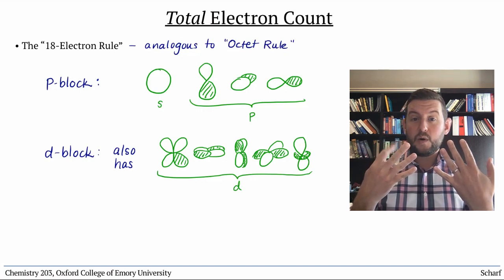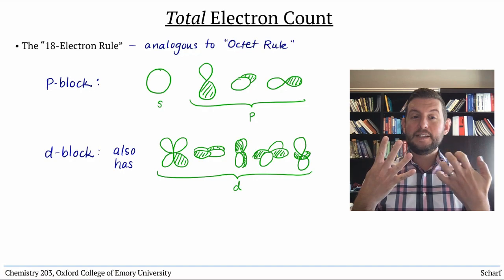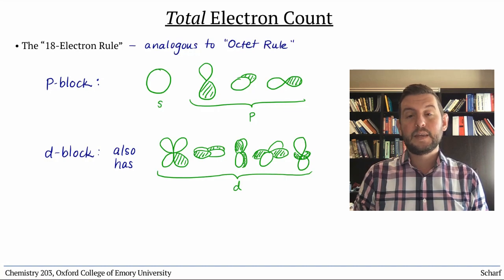Since there are one s orbital, three p orbitals, and five d orbitals on a given metal atom, it can accommodate up to 18 electrons.